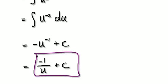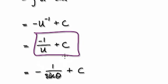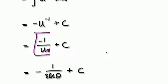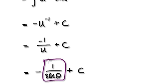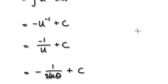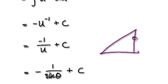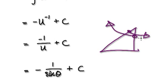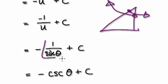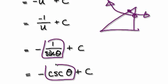Earlier we said u equals sin(θ), so we substitute back: the result becomes negative 1 over sin(θ). Remember that 1 over sin(θ) is cosecant, so the answer becomes negative cosecant(θ) plus a constant.